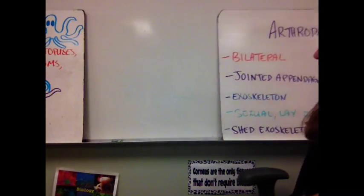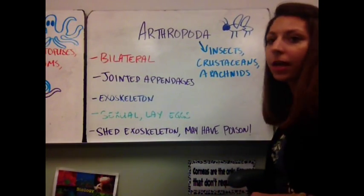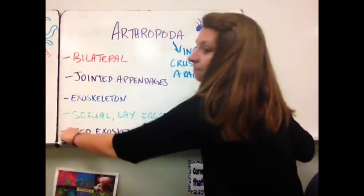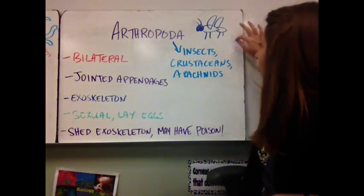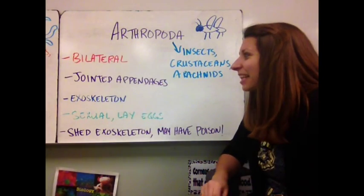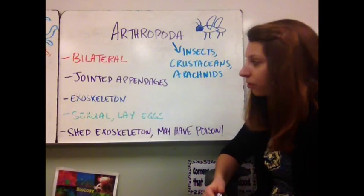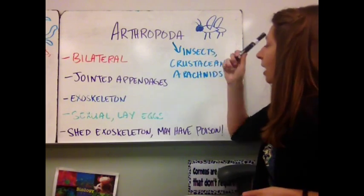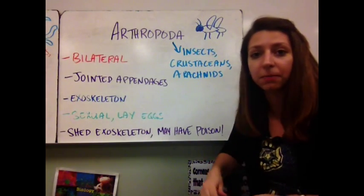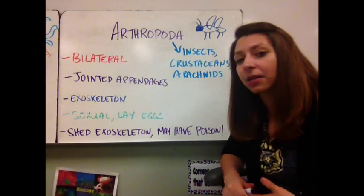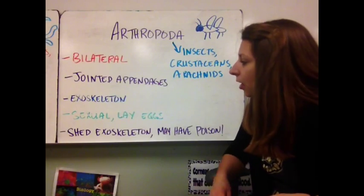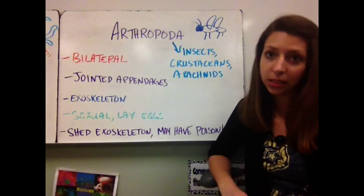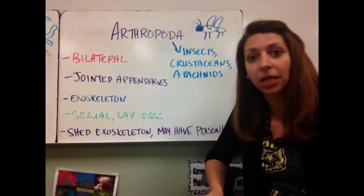Moving on to our insects — Arthropoda. These guys include our insects, our crustaceans, and our arachnids, so it's a really large group. They also have bilateral symmetry. They have jointed appendages attached to their head, abdomen, and thorax — they have this segmented body structure. A lot of them have an exoskeleton made of chitin, a specialized material. They have sexual reproduction where they lay eggs. Some of them have the ability to shed their exoskeleton during certain parts of their life, and some of them also have poison contained in their abdomen.